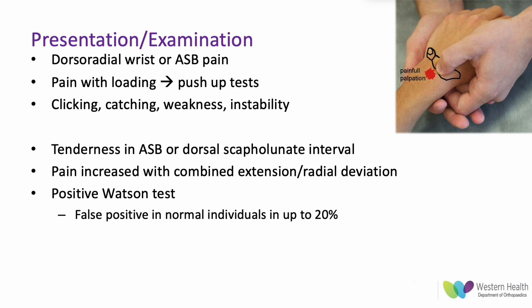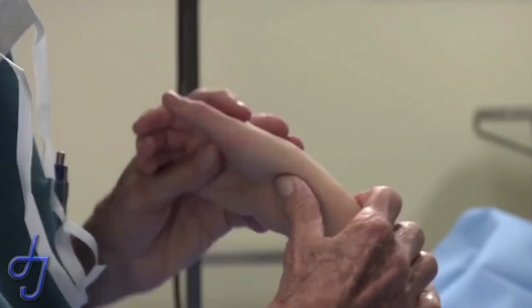When the wrist is put into extension and radial deviation, that will often cause pain as it pushes the scaphoid further towards the radius. The Watson test is sometimes positive, but can have false positives in normal individuals due to hyperlilgamentous laxity.